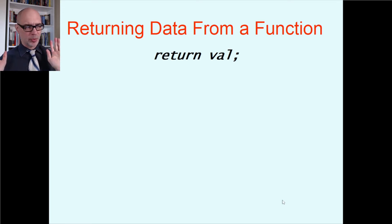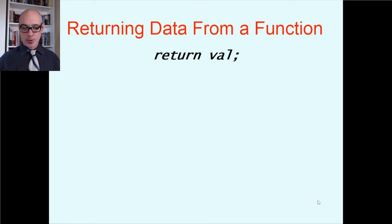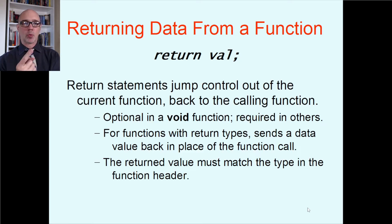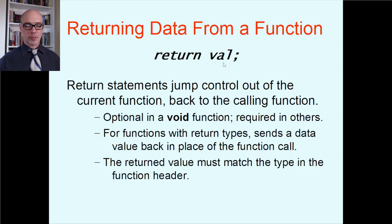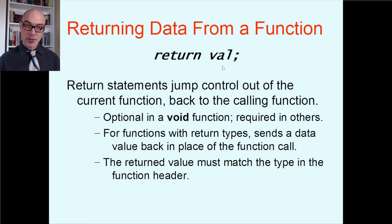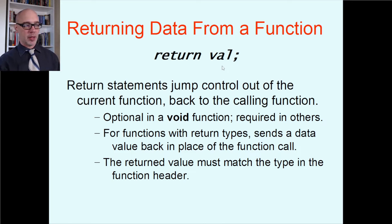There's a keyword called return. We have it at the end of a main function all the time. A function that does return a value has to have this statement, and it does two things. Item one: when you hit the return, you jump out of the function back to whoever called you. Item two: you're sending back one piece of information written right after it — a value. That could be a variable, a literal number like the zero in main, or a whole mathematical expression like score one plus score two. Whatever is there gets computed, and that one thing gets sent back to whoever called your function.